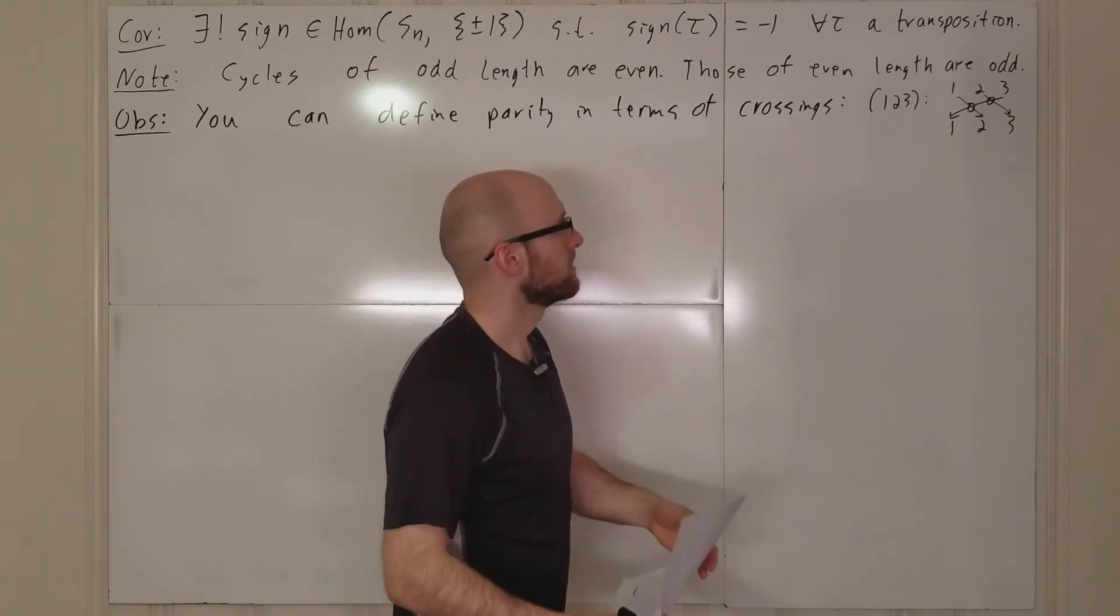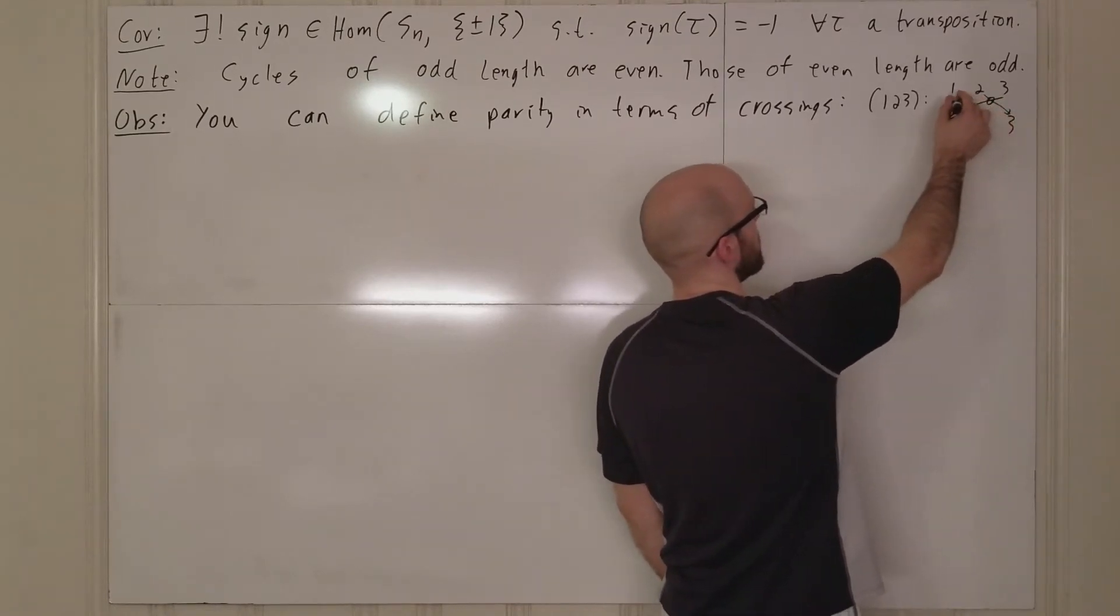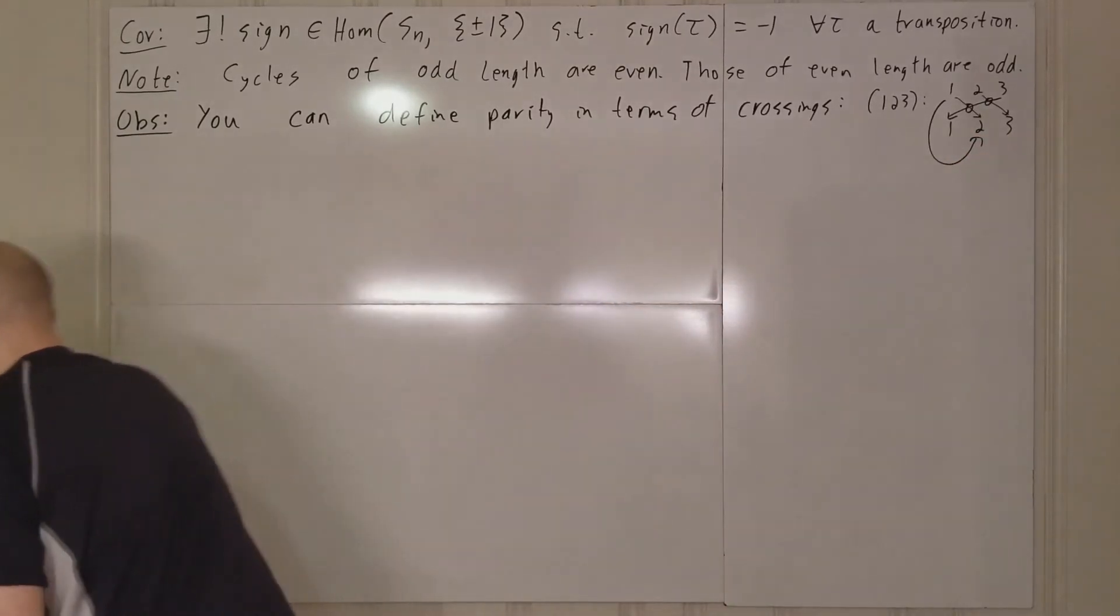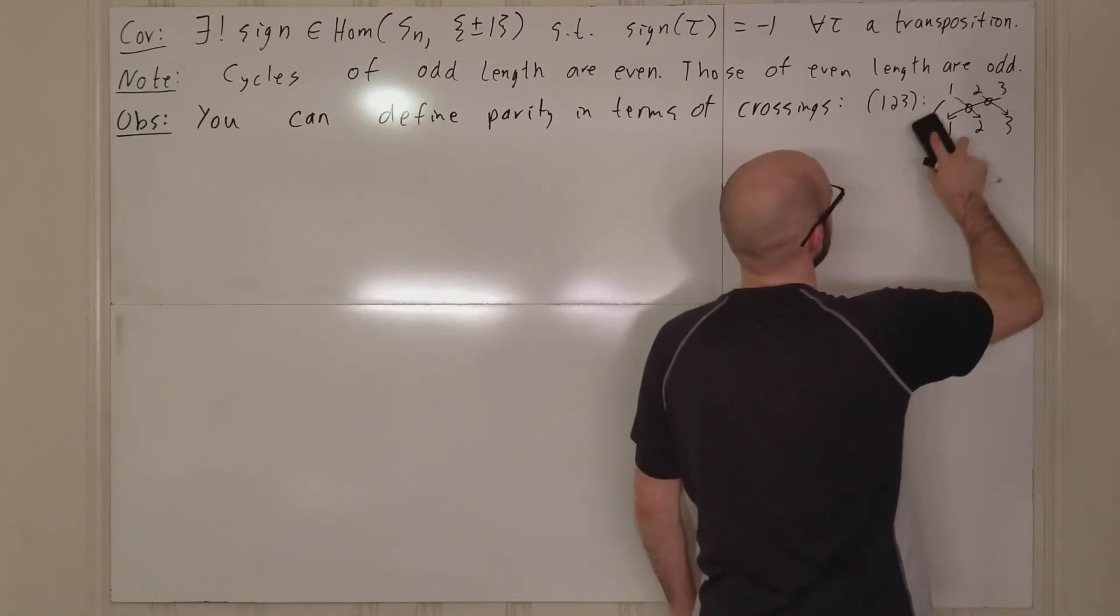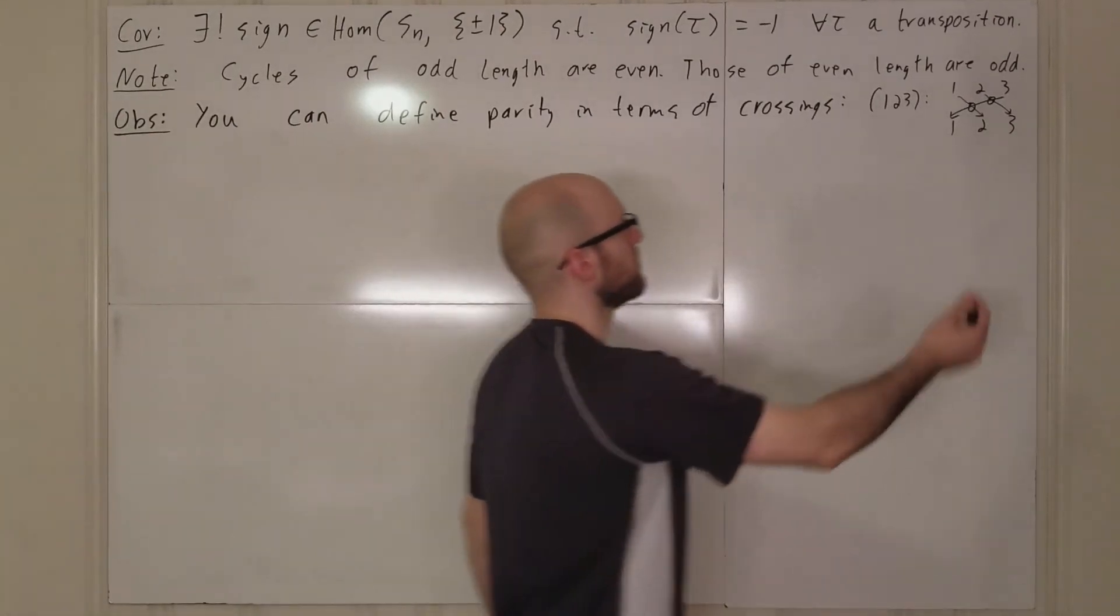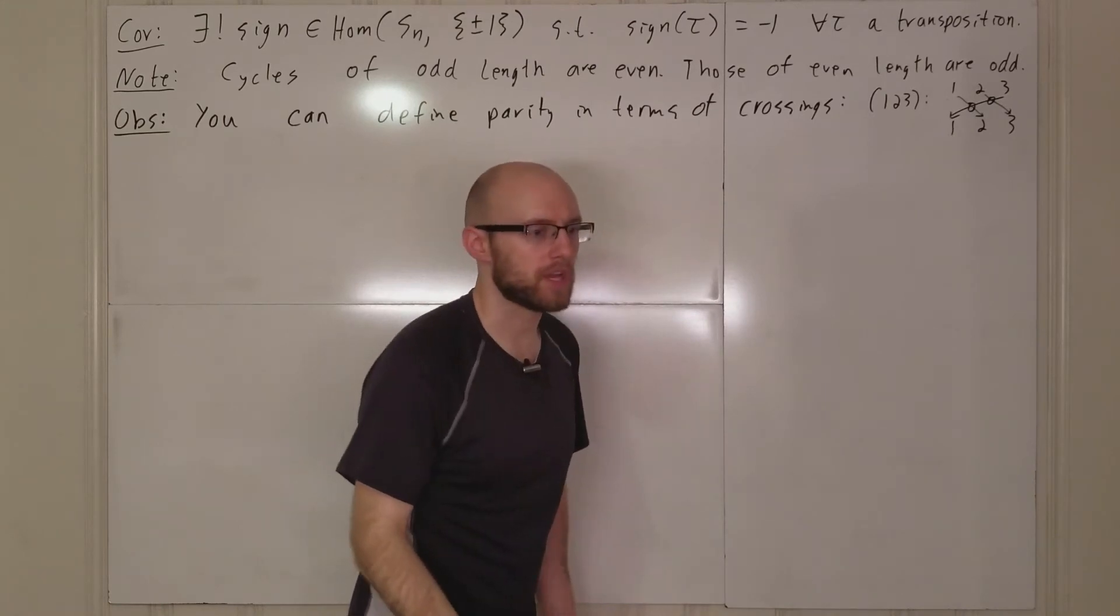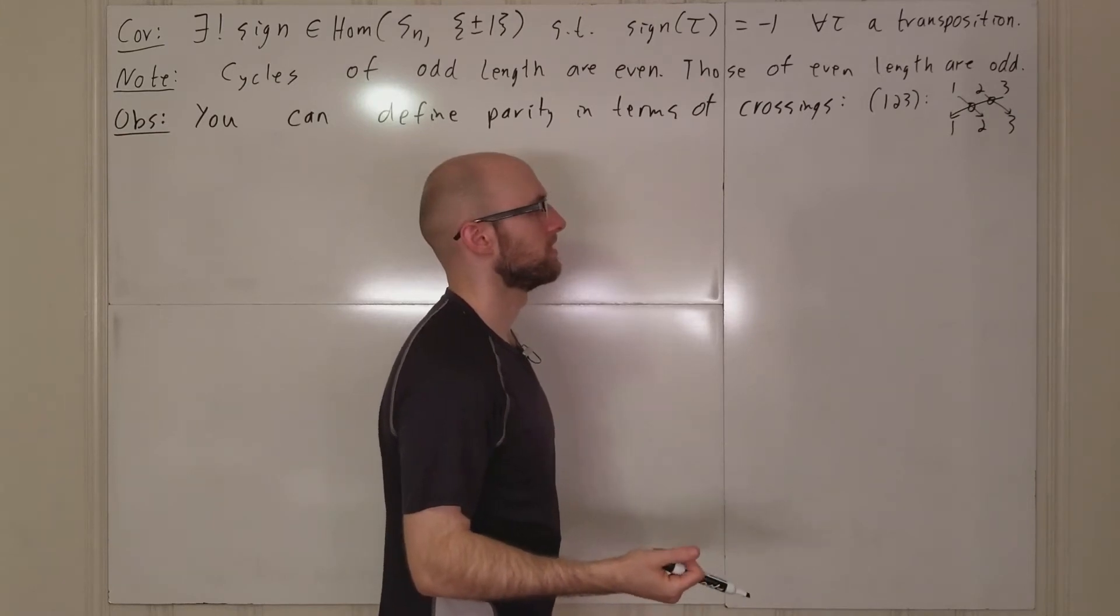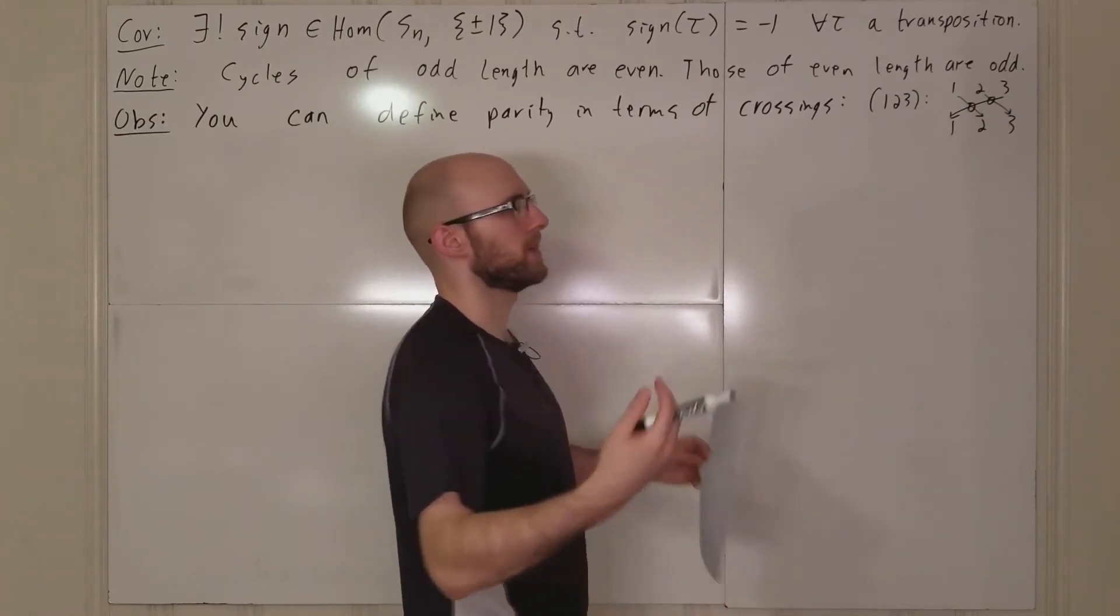And it turns out it doesn't matter how you draw these. I mean, of course, you can't go around here and under, that's cheating. But any way you draw these arrows, like, if you were to draw them more squiggly and complicated, maybe you could draw them in such a way that they would intersect more times, but every time you would do that, it would increase by two or decrease by two, and so the parity would be maintained.